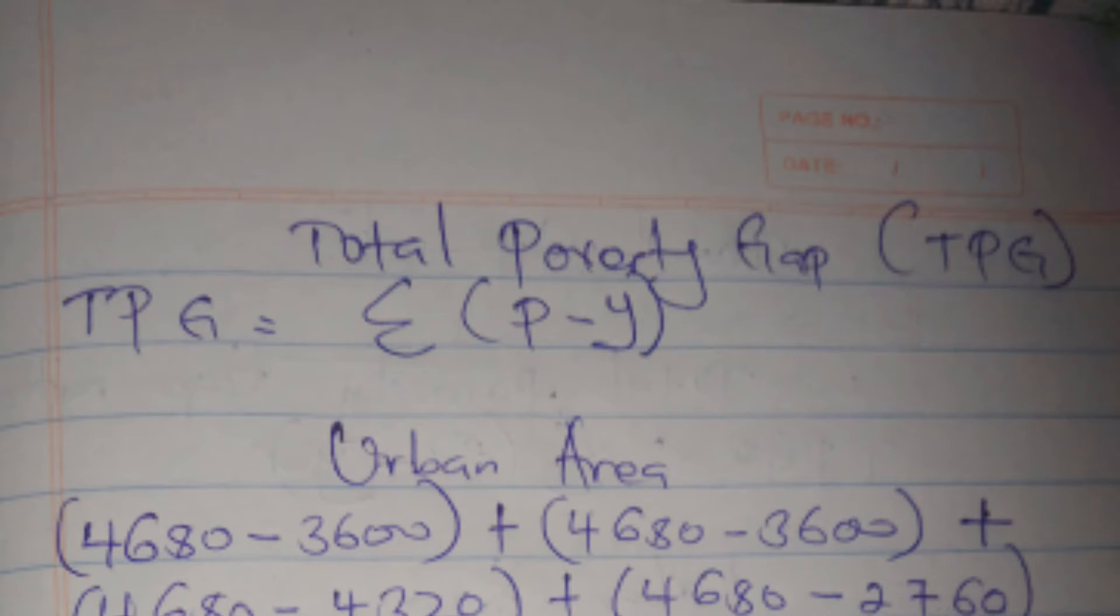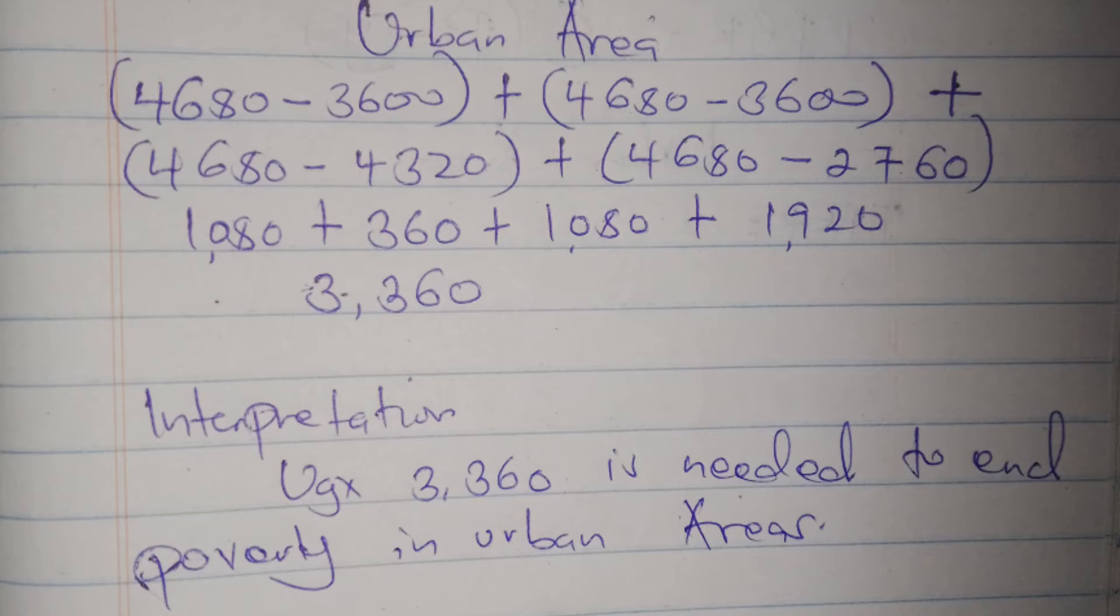We shall start by calculating the total poverty gap in the urban area, whereby we shall just subtract the poverty line minus the income of those individuals that live below the poverty line.